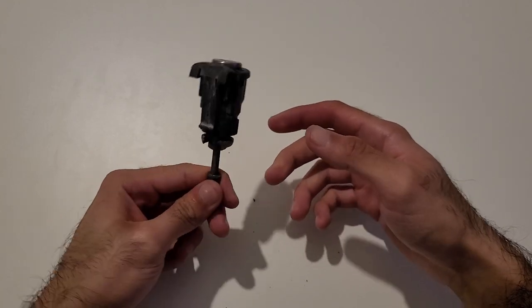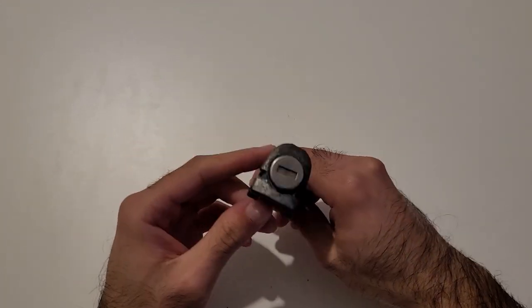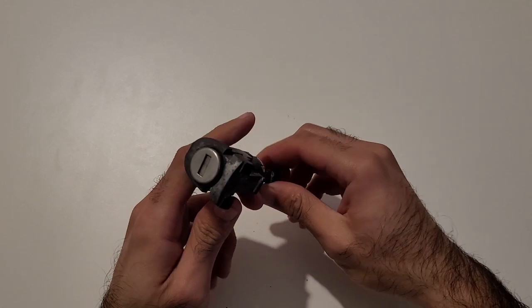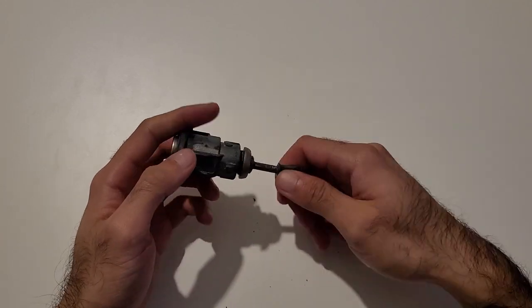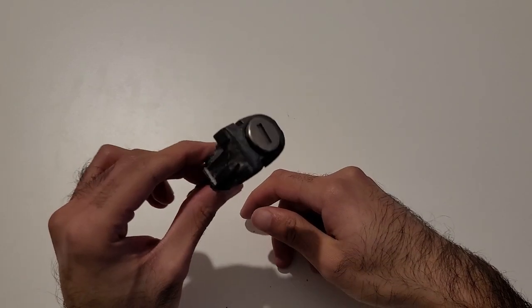So that is it, your Volkswagen door lock barrel disassembled, repaired, and put back together. If you like the video, feel free to drop a thumbs up, drop me a comment with your feedback and anything you want me to cover in future videos, and do subscribe if you like my content. Thanks for watching.